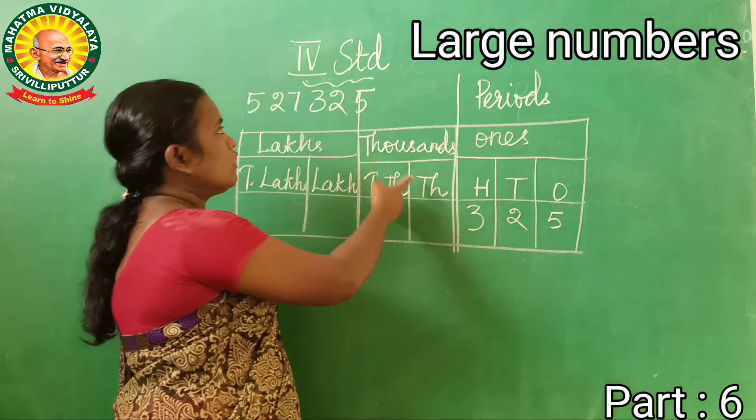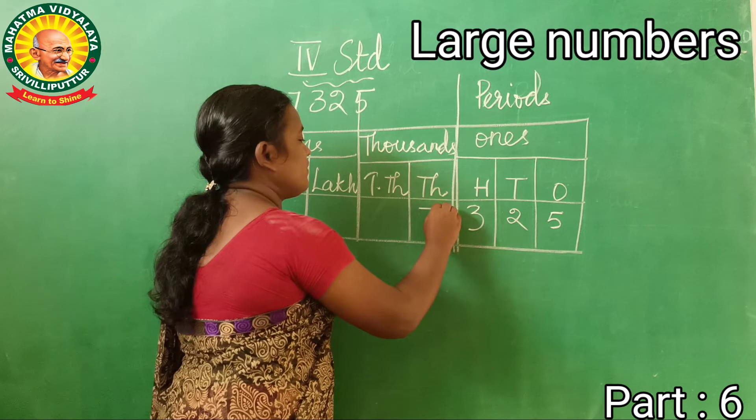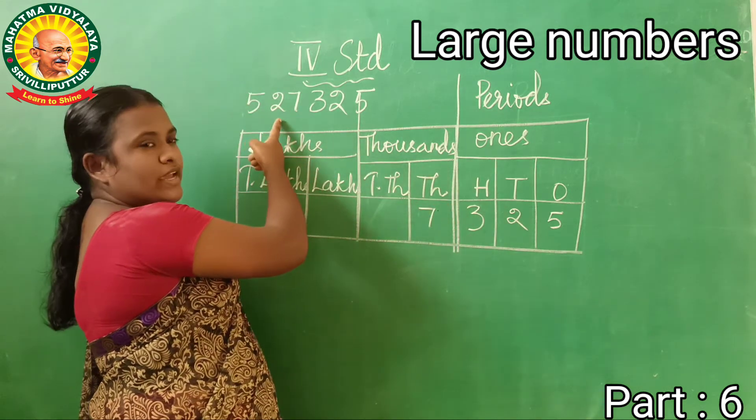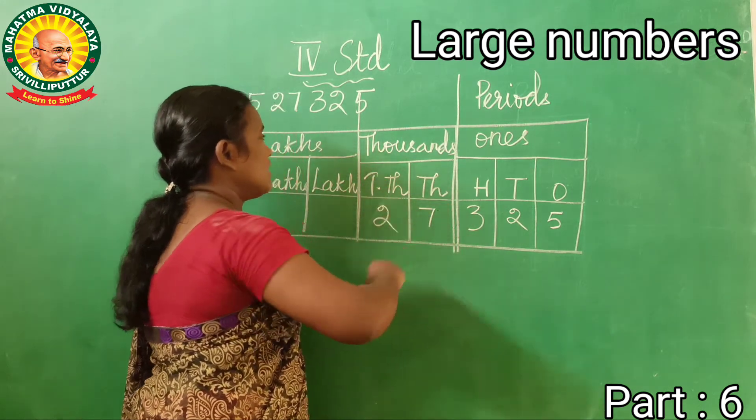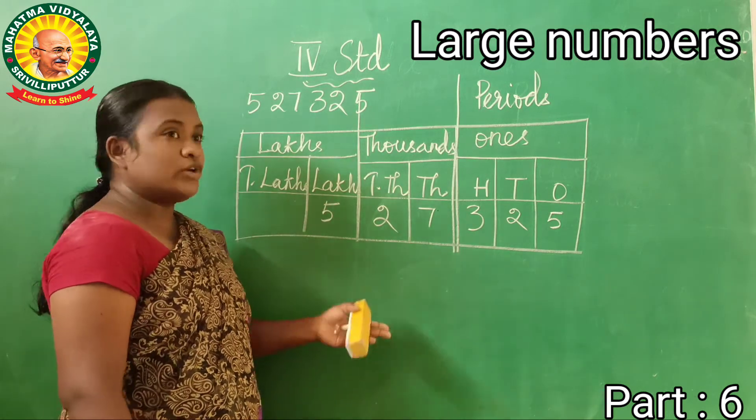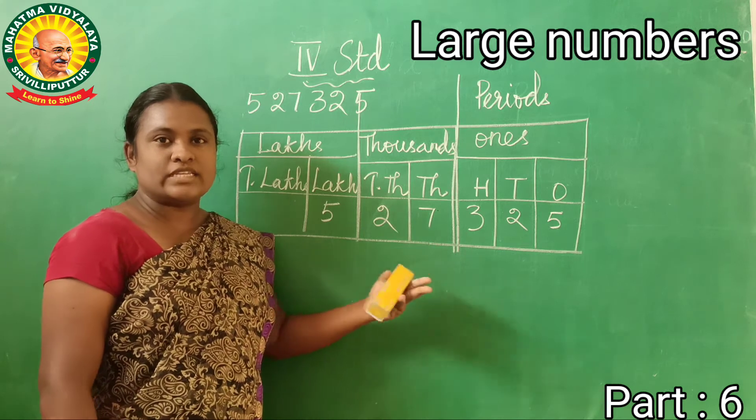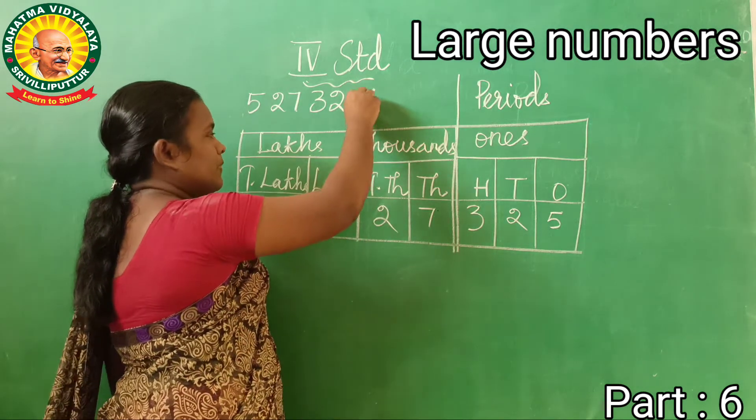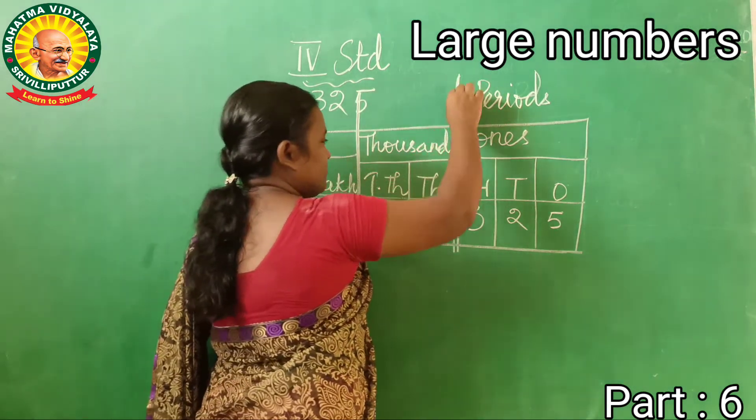The hundredth place? Three. Thousandth place? Seven. Ten thousandth place? Two. And the lakhs place? Five. Now we are going to separate, that is, we are going to insert commas.